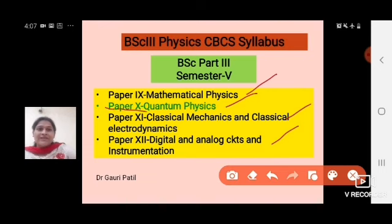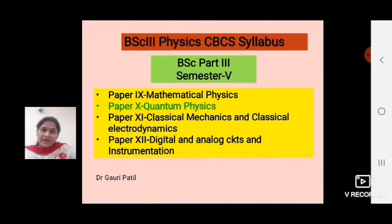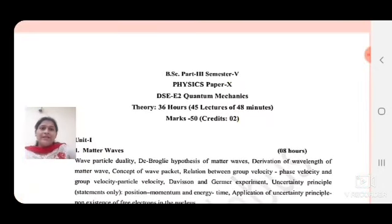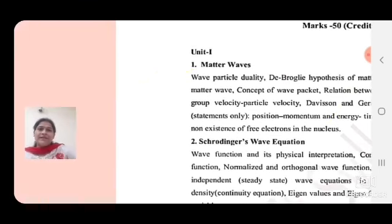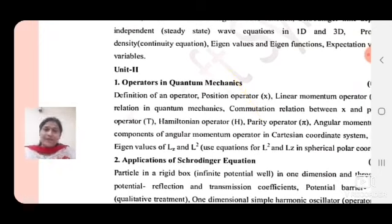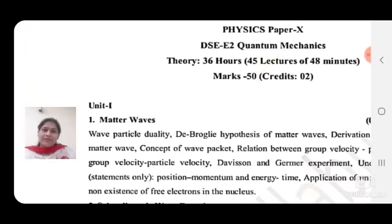This is Quantum Physics, Paper Number 10, and I will teach you throughout this semester. In Quantum Mechanics of Paper 10 of Semester 5, you have a total of four chapters. First is Matter Wave, second is Schrödinger's Wave Equation, and in Unit 2 there are again two chapters: first is Operators in Quantum Mechanics, and second is the Application of Schrödinger's Equation. We will start with chapter Matter Wave from Unit 1.